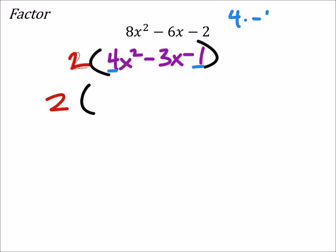So 4 times negative 1 is negative 4. I need two factors of negative 4 that add up to negative 3. So I'm going to use negative 4 and 1, because when I add them, I get negative 3.